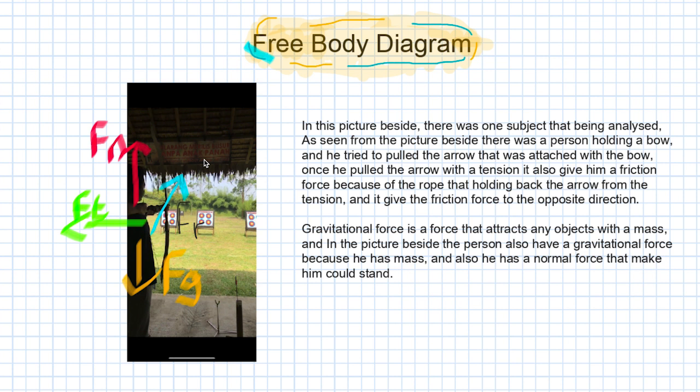In this free body diagram, as you can see in the picture, there is a person holding a bow trying to pull the arrow attached to it. When he pulls the arrow with tension, it also gives him a friction force from the rope holding back the arrow, acting in the opposite direction. The gravitational force attracts any object with mass, so the person also has a gravitational force and a normal force acting in the opposite direction.